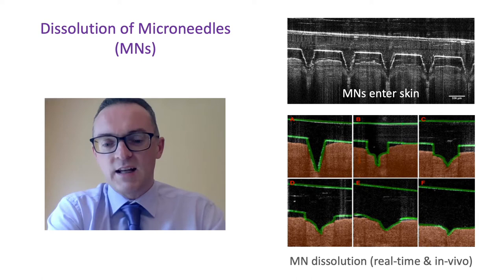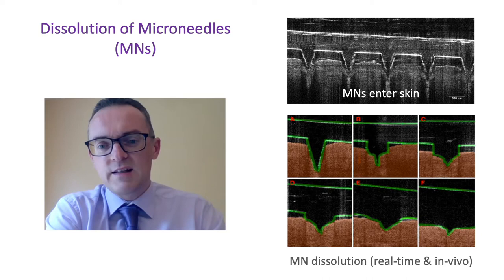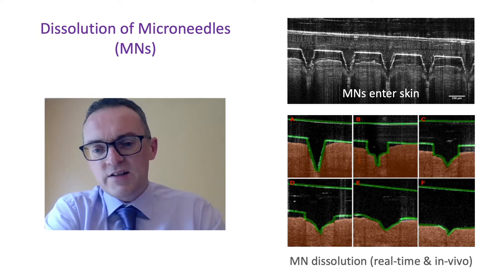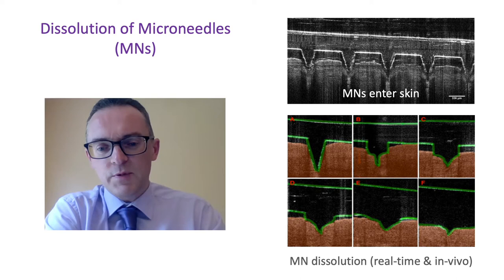This leads to a profound immune response. In the top optical coherence tomography image, we can see microneedles penetrating the skin. The colored images beneath, using green and brown colors to show the outline of the microneedles and skin, show the initial insertion — note the gap between the lower base plate and the stratum corneum. As time progresses, the microneedles start to dissolve, changing shape and getting smaller, depositing their active ingredient. Very little of the microneedle remains, and the base plate begins to dissolve and adheres to the stratum corneum.